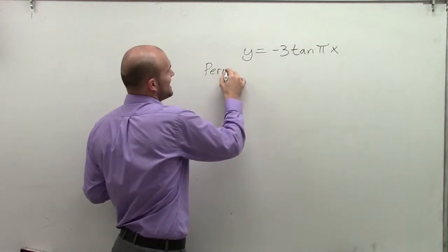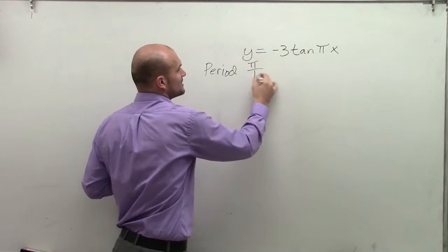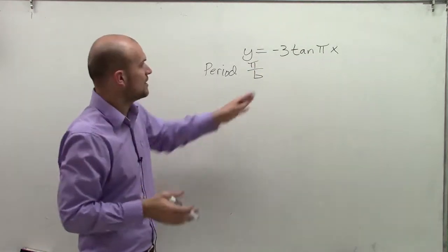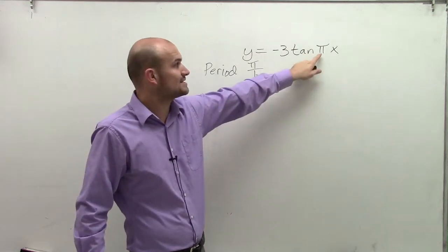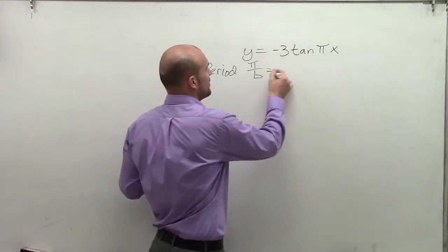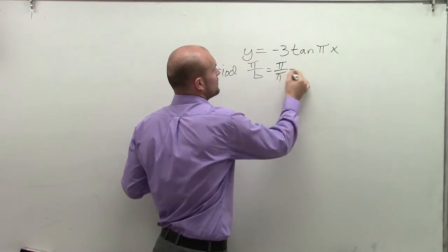Now remember, on the tangent graph, our period is going to be pi divided by b. I've looked at my b, which is the coefficient of my x. I notice that the coefficient of my x is pi. Therefore, I have pi divided by pi, which equals 1.